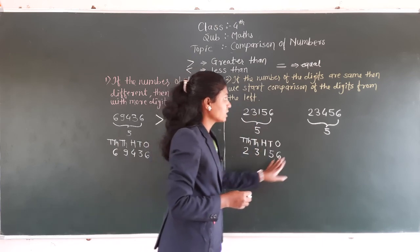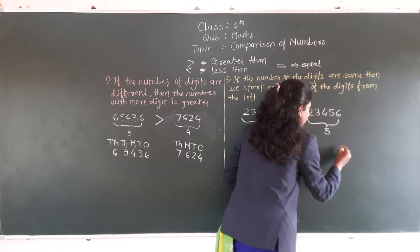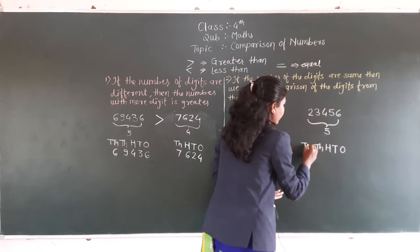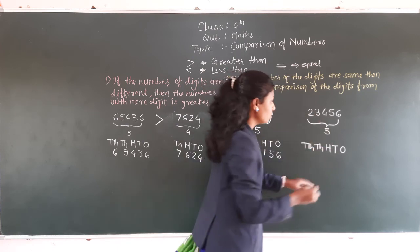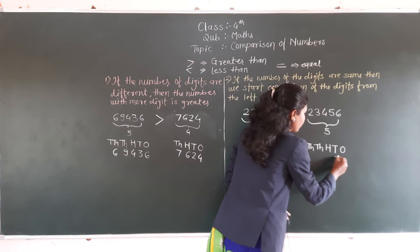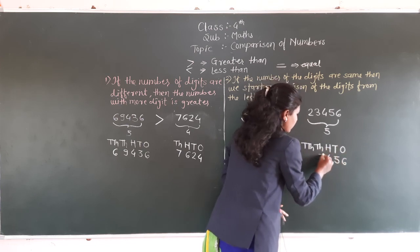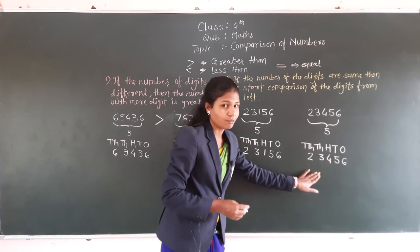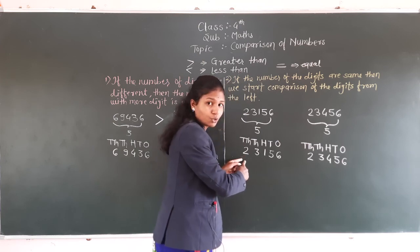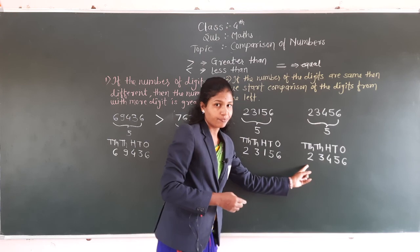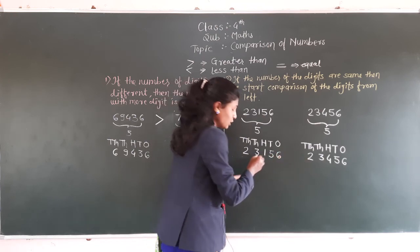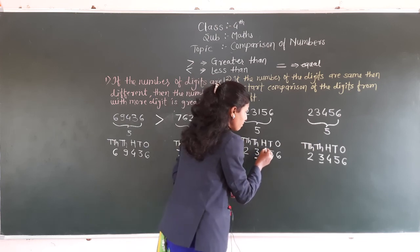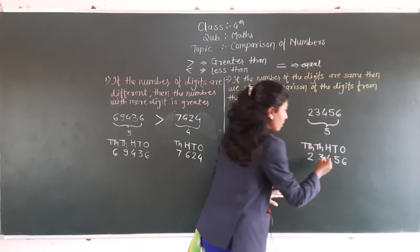अभी हमने यह values put down करी. Next, we put down the same for the second number: 1s, 10s, 100, 1000 and 10,000. The value of 1s is 6, then 5, then 4, then 3, and 10,000 is 2. Now we find the difference. Here at 10,000 place — यहाँ पे भी 2 हैं और यहाँ पे भी 2 हैं. Then at 1000 place — here is also 3 and here is also 3. Then next — यहाँ पे 100 की place पे यहाँ क्या है? 1 है ना? And यहाँ पे 4.